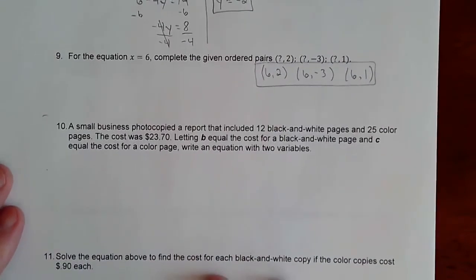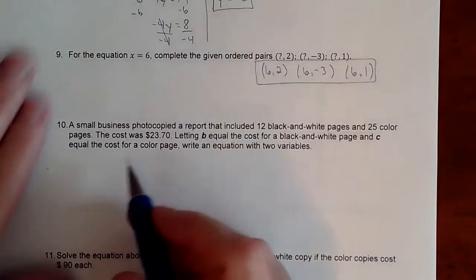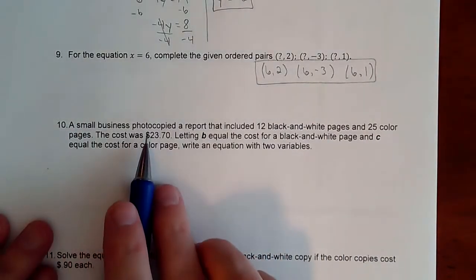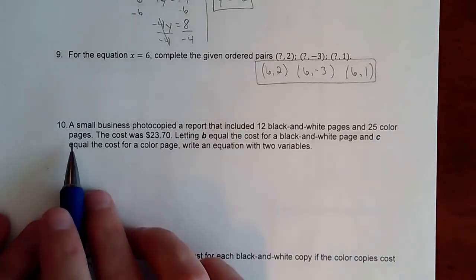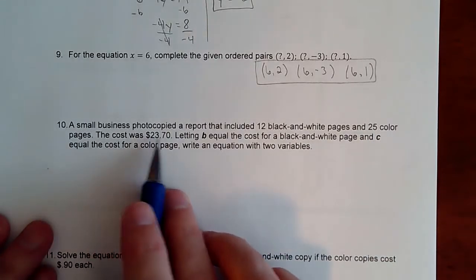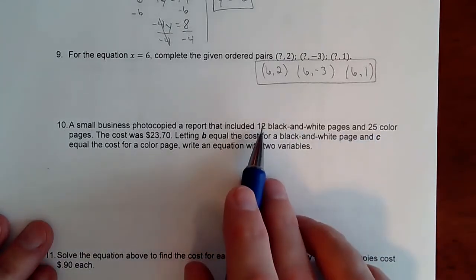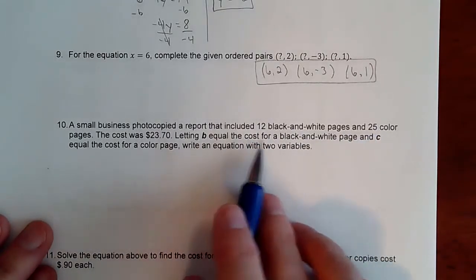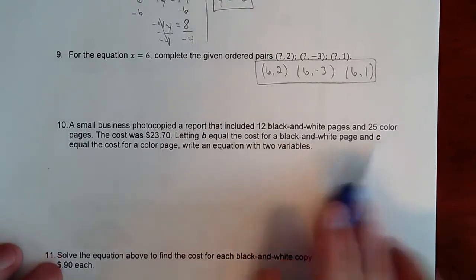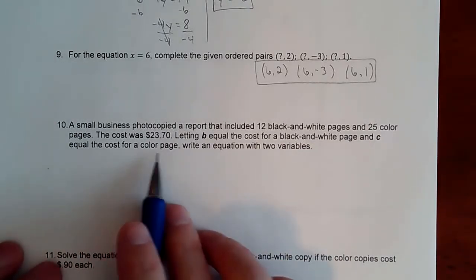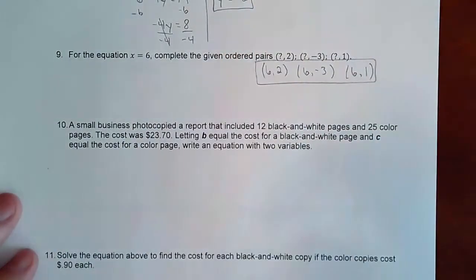And then two more here. So we're going to create an equation. We're going to find a solution and solve the problem. So we have a small business photocopied a report that included 12 black and white pages, 25 color pages. The cost was $23.70. I guarantee that the color pages are going to cost more than the black and white. So letting B equal the cost for a black and white page and C equaling a cost for the color page, write an equation of the two variables.